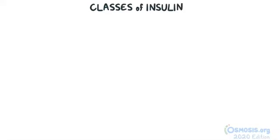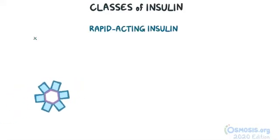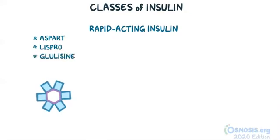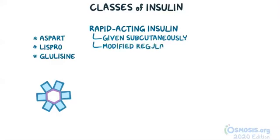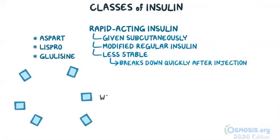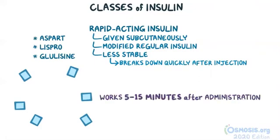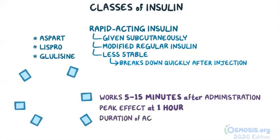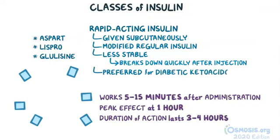Rapid-acting insulins include insulin aspart, lispro, and glulisine. These medications are given subcutaneously and are modified versions of regular insulin with different sequences of amino acids, making them less stable so they break down into single monomers soon after injection. Rapid-acting insulins begin working within 5-15 minutes of administration with a peak effect at 1 hour, and their effects last for 3-4 hours. These insulins are injected right before a meal or used in insulin pumps, and are the preferred insulin for treating diabetic ketoacidosis.